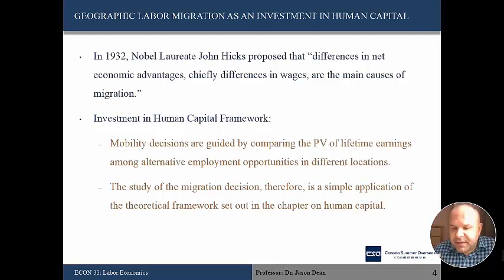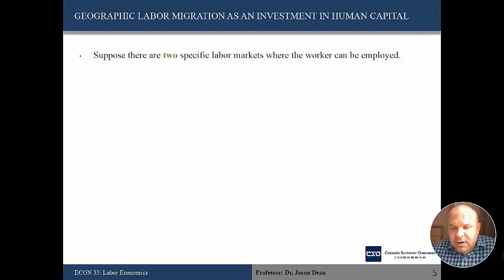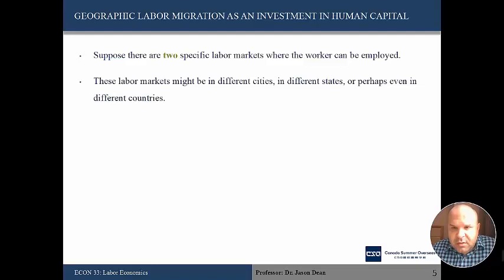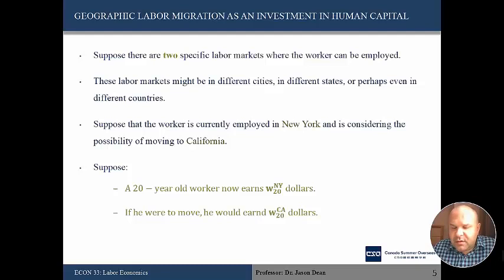Migration decisions are guided by the present value of lifetime earnings, looking at the present value of different employment opportunities. Suppose there are two specific labor markets where a worker can be employed — in different cities, states, or countries. Suppose the worker is currently employed in New York and considering moving to California. If this person is 20 years old, their wage in New York is denoted W_NY20, and if they moved, they would earn W_CA20. The cost of moving is denoted capital M.